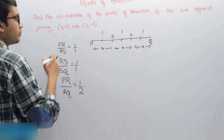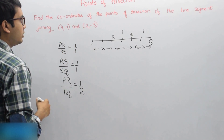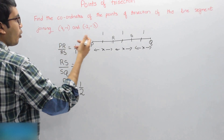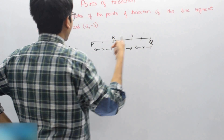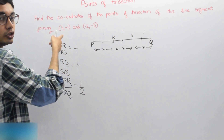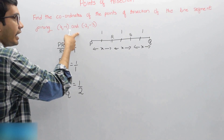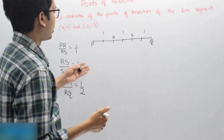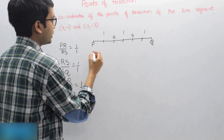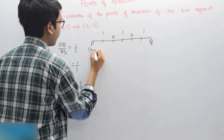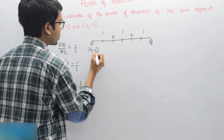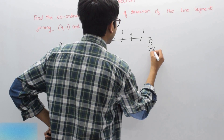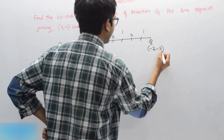Let us apply the concept here. The problem says: find the coordinates of the points of trisection of the line segment joining (4, -1) and (-2, -3). So let us assume P as (4, -1) and Q as (-2, -3).